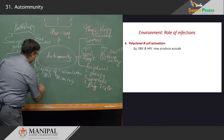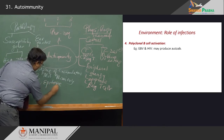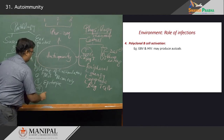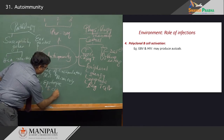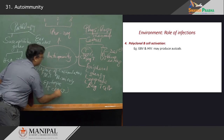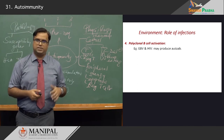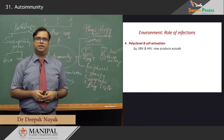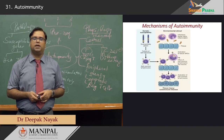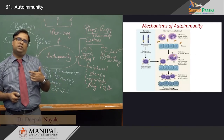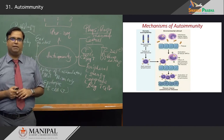Another important mechanism is polyclonal B cell activation. B cell activation in the context of viral disorders such as HIV and Epstein-Barr virus may produce a host of autoantibodies, and these autoantibodies will react against the body's own tissues — a lesser-known mechanism but relevant nonetheless.